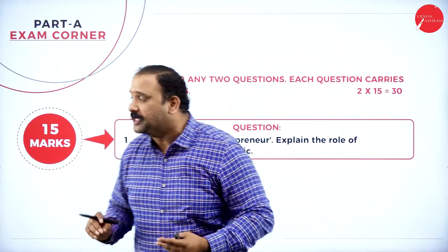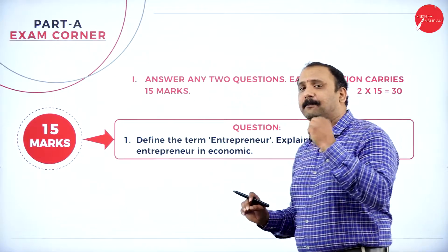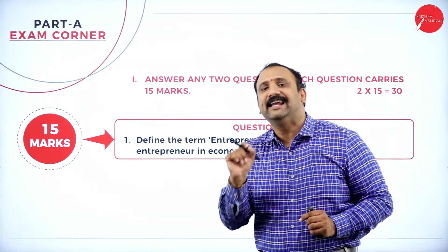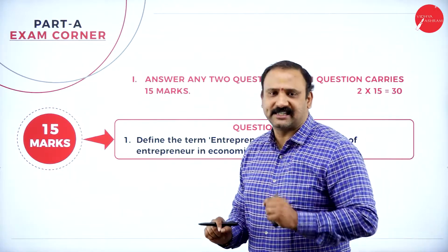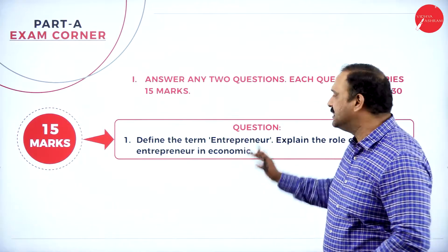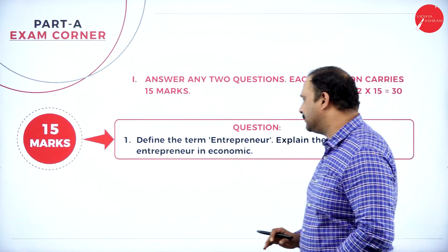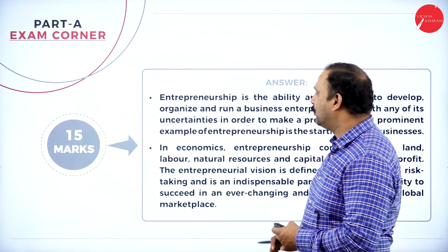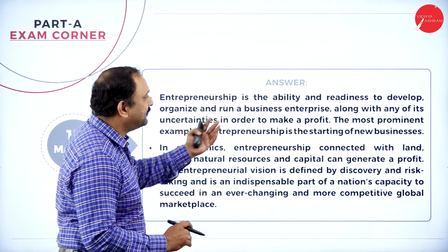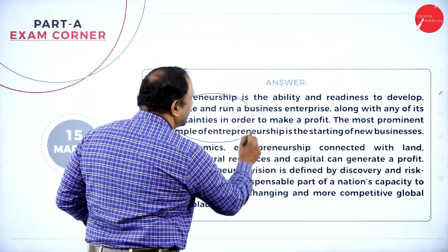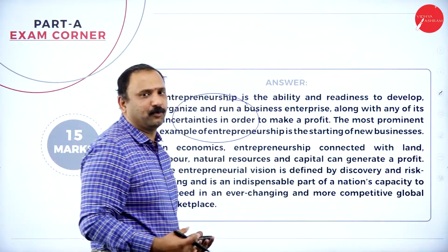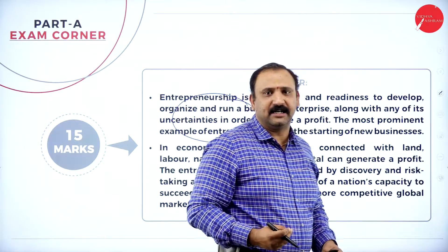If you are able to write two questions correctly, you will get 30 marks straight. Please pay attention to writing neatly and legibly with examples to score more. Starting with the first question — define the term entrepreneur. Entrepreneurship is the ability and readiness to develop, organize, and run a business enterprise.